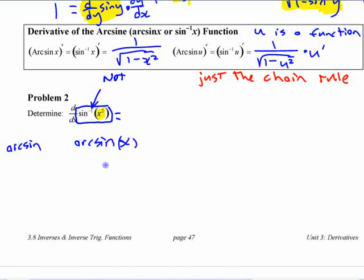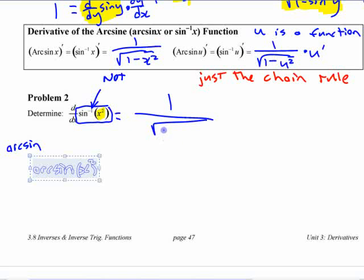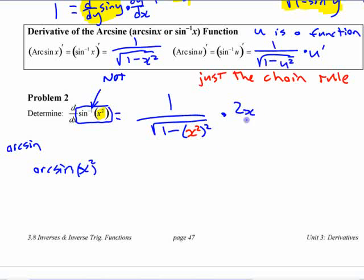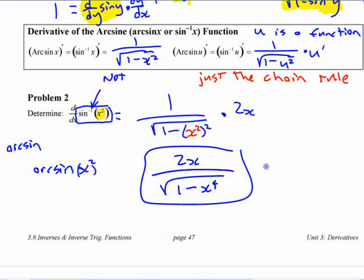The derivative of arc sine of x squared is going to be, it's going to be just using the chain rule, right? You know, it's one over square root of one minus x squared squared, right? One minus x squared. And then times, what do we need here? Times 2x. Okay, 2x over square root of one minus x to the fourth. It's just using the chain rule. There's nothing different about that.